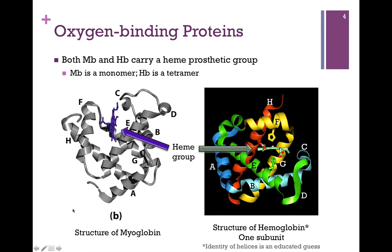I would point out one more thing: the relative orientation of that heme group in myoglobin. You'll notice a portion of it is more buried within the protein, and the portion at the top is more solvent exposed. Let's look more closely at that ring structure. Here's the heme group — it's called a porphyrin ring. It has an alternating series of single and double bonds with a high degree of resonance, and for this reason it's highly colored. In fact, the name porphyrin means purple. At the top we have polar propionate groups, which are the more solvent exposed portion. And then we have nonpolar vinyl groups, which are more buried within the protein. So not only is the heme important for function, but its orientation within the protein is also vital to its function.